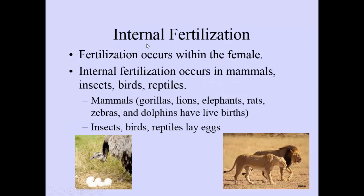Internal fertilization — this is what humans do. Fertilization occurs within the female. Internal fertilization occurs in mammals, insects, birds, and reptiles. Mammals like gorillas, lions, elephants, rats, zebras, and dolphins have live births. Insects, birds, and most reptiles lay eggs. Here we have what looks like an ostrich laying ostrich eggs. And here a lion and a lioness mate, and the lioness gives birth.